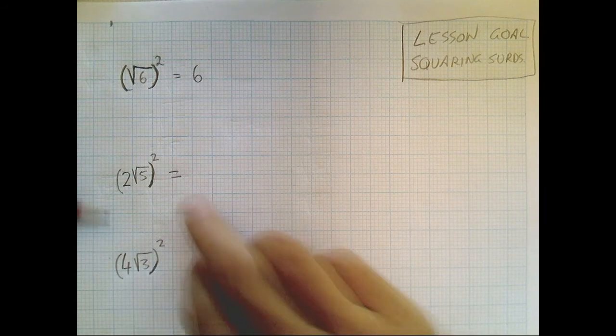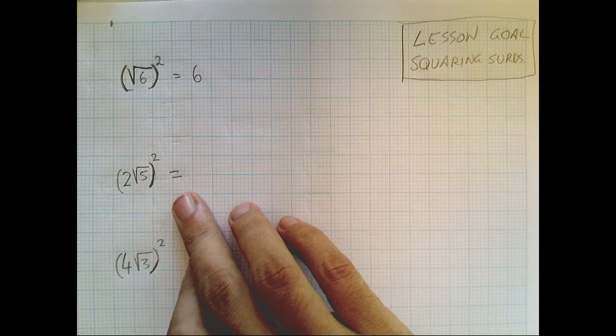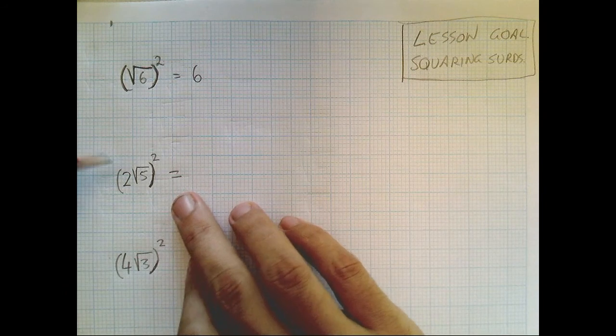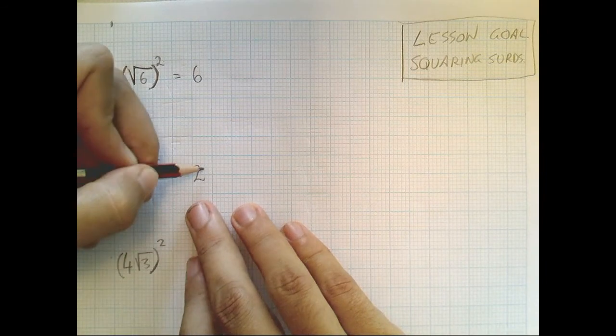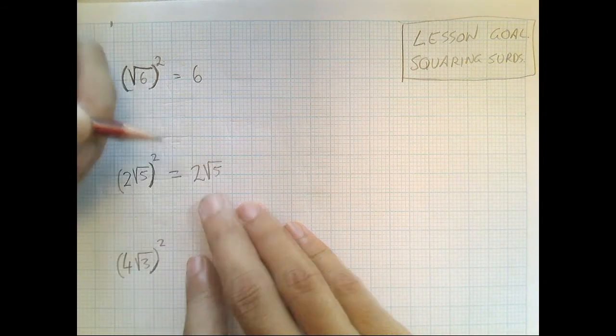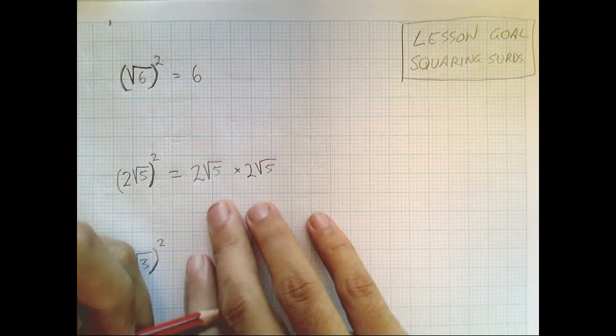Okay, so what it's really saying, when you square something, you're multiplying it by itself. So let's take a look at what this looks like. It looks like two root five times two root five.